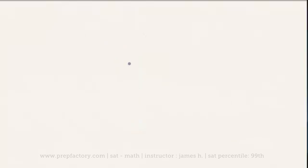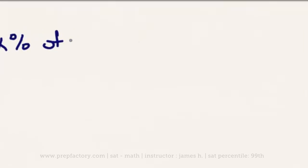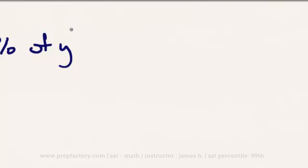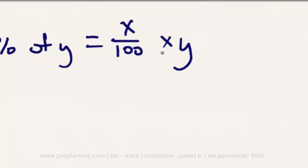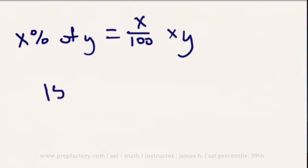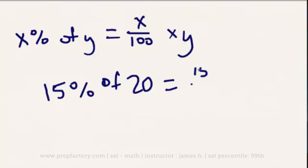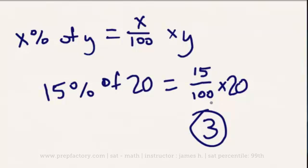In a variation of the same formula, if you're trying to find x percent of y, all you need to do is multiply x over 100 times y. For example, 15% of 20 equals 15/100 times 20, which equals 3.